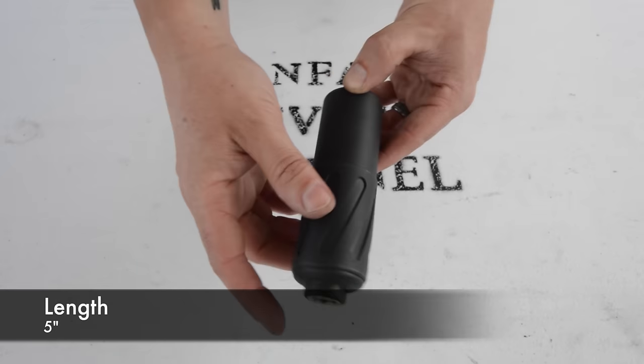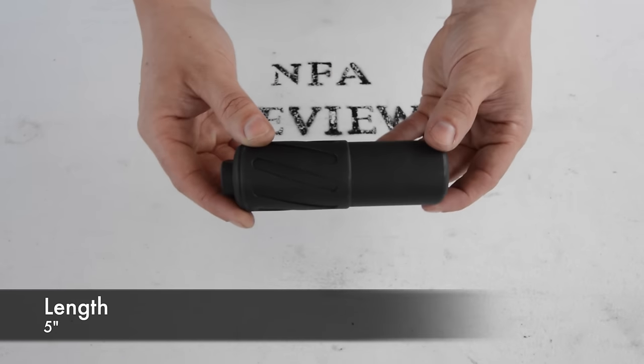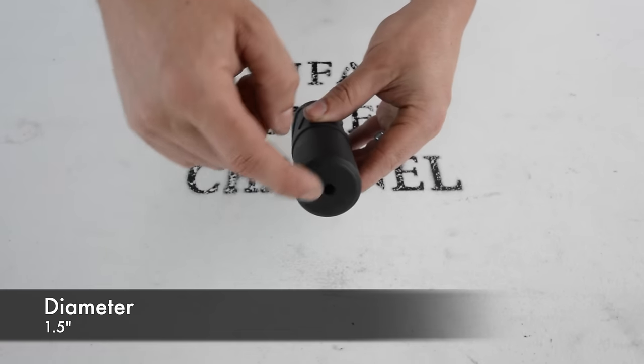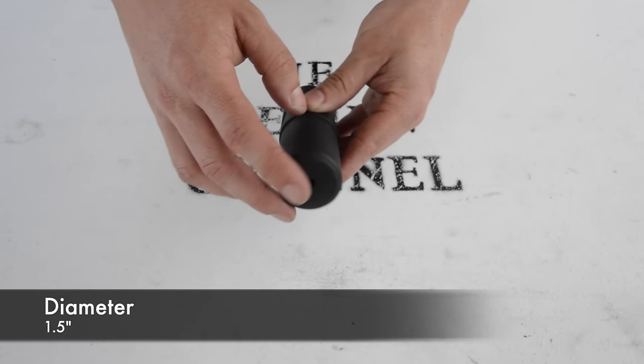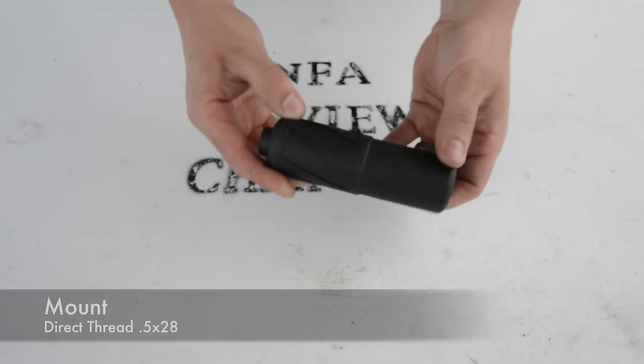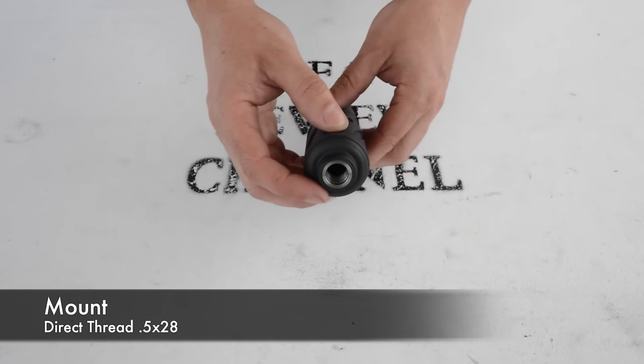It comes in at only 5 inches in length so it's definitely super compact and I'll show you a size comparison here in a minute. It's 1.5 inches in diameter and is direct thread utilizing half by 28 thread pitch.